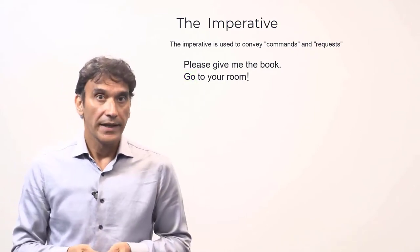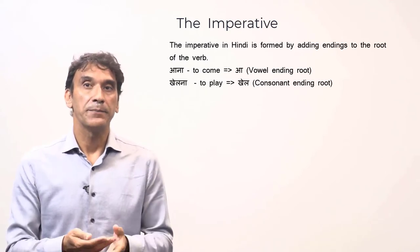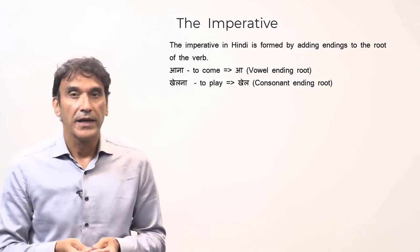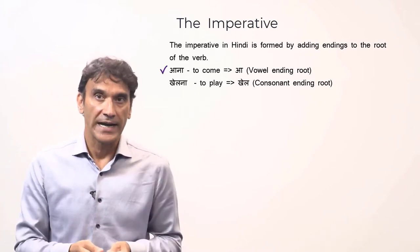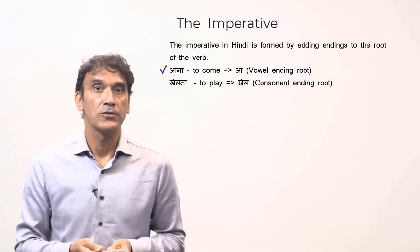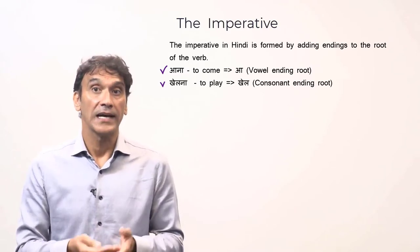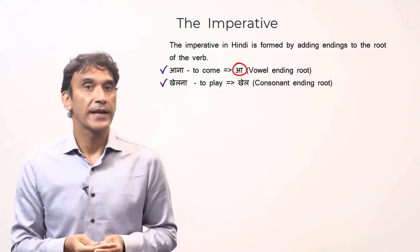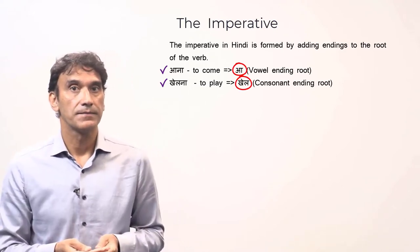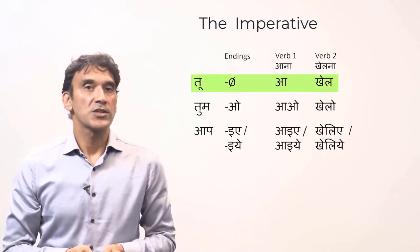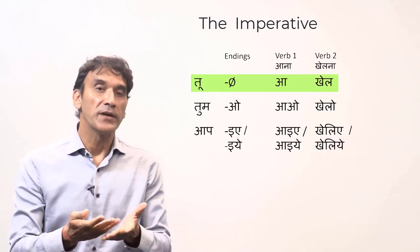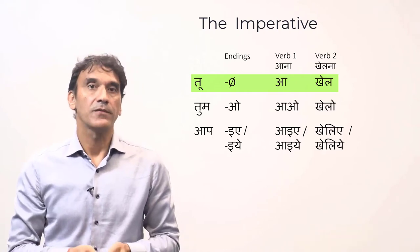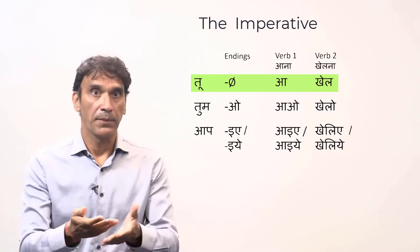Let's take imperative in Hindi. The imperative in Hindi is formed by adding endings to the root of the verb. We will take two verbs as examples: verb one, 'aana' (to come), a vowel-ending root, and verb two, 'khelna' (to play), a consonant-ending root. For 'aana' the root is 'aa,' and for 'khelna' the root is 'khel.' The imperative form for 'tu' does not have any ending — the root itself is the imperative form.